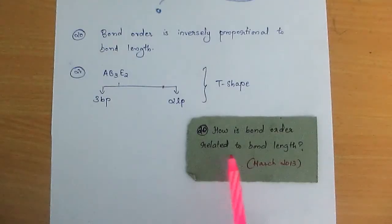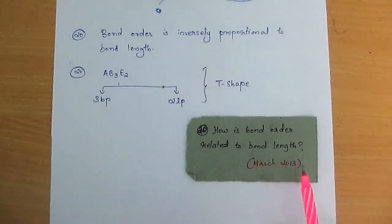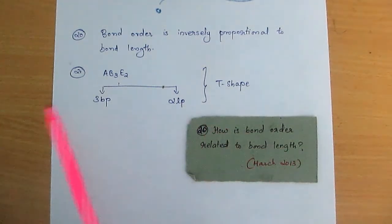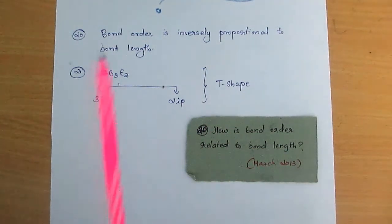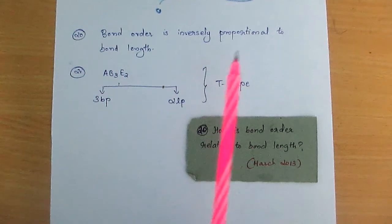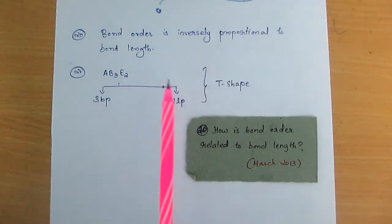The 20th question, asked in March 2013: how is bond order related to bond length? The bond order is inversely proportional to bond length.